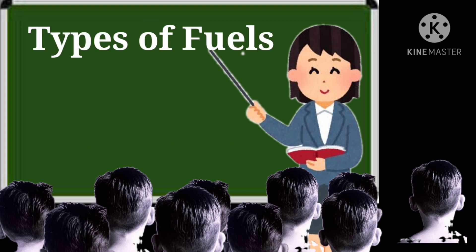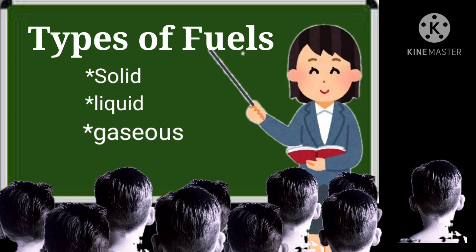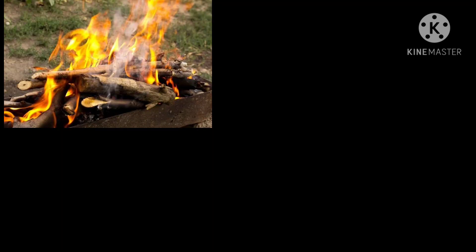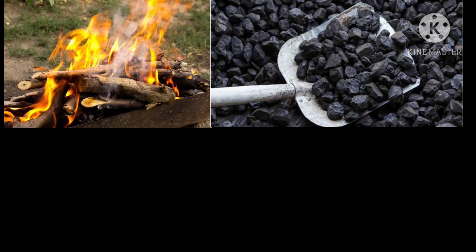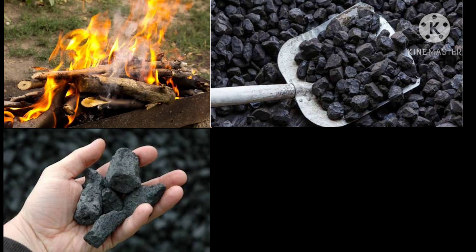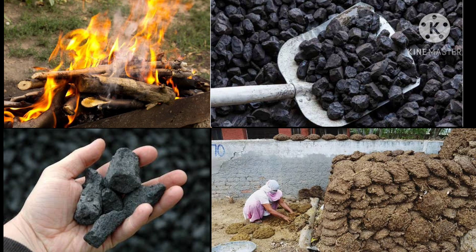Types of fuels. Fuels are available in solid, liquid, or gaseous forms. Fuels teeno forms mein hote hain — solid form mein bhi, liquid form mein bhi, and also in the gaseous form. Wood, coal, coke, and cow dung cakes are some examples of solid fuels.